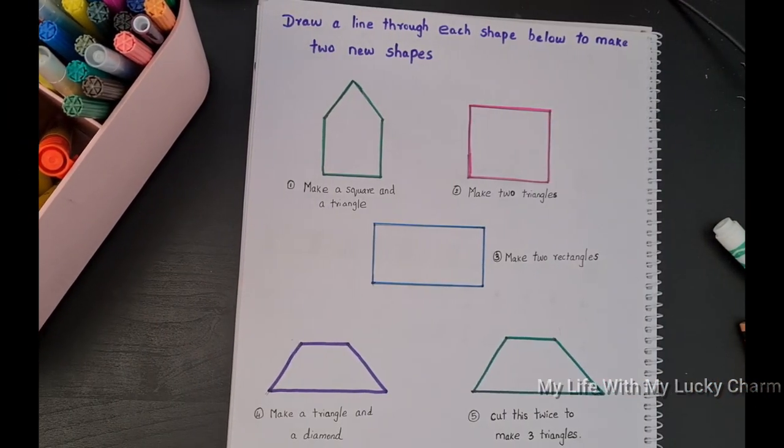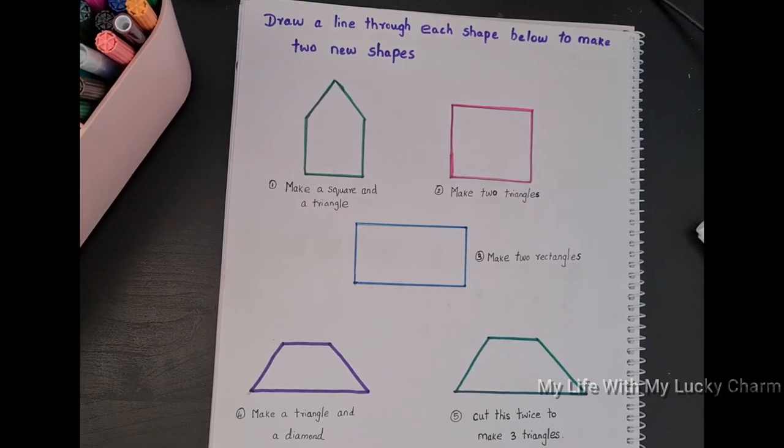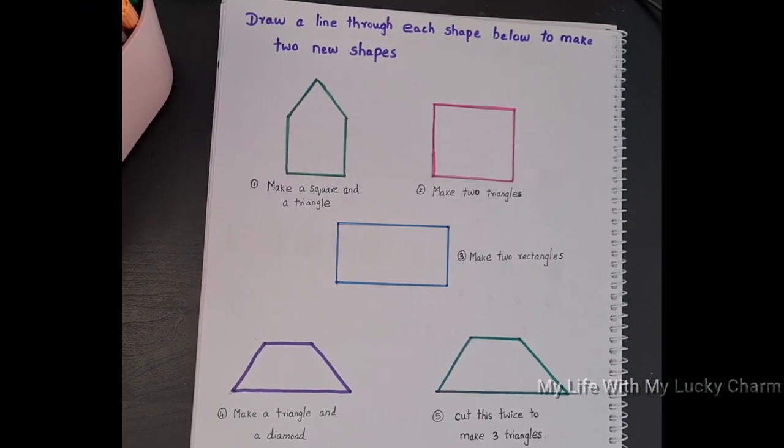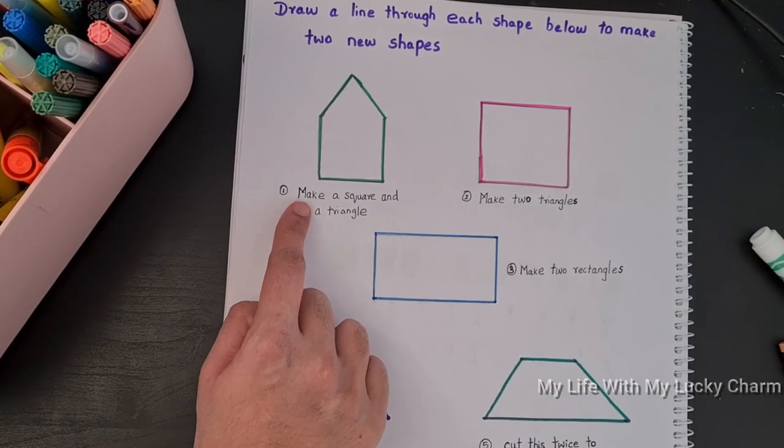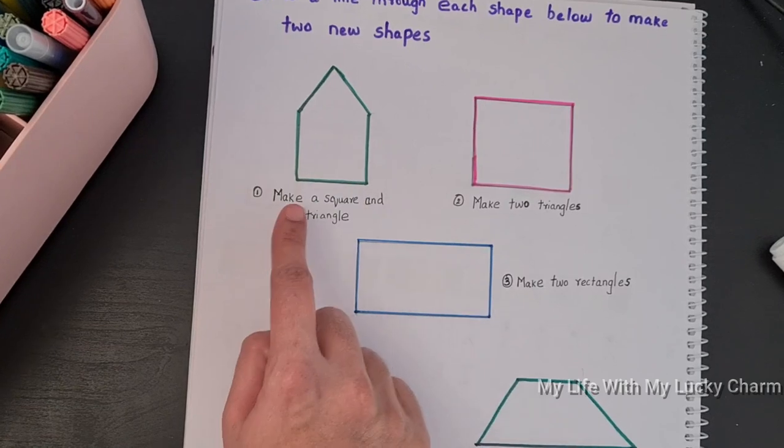So our next activity is draw a line through each shape below to make two new shapes. For example here, he needs to draw a line through each shape. Here he needs to draw a line in this to make a square and a triangle.